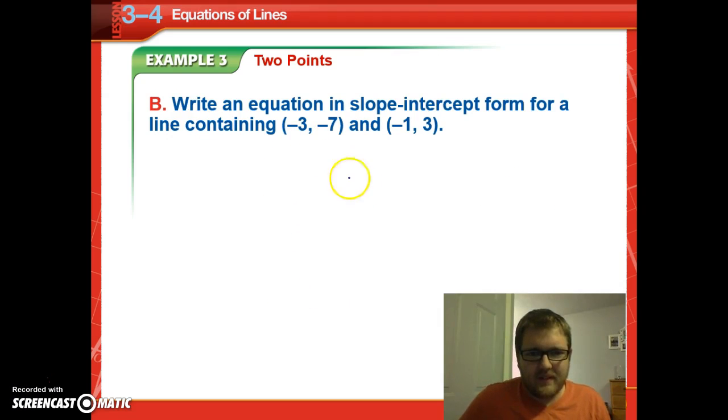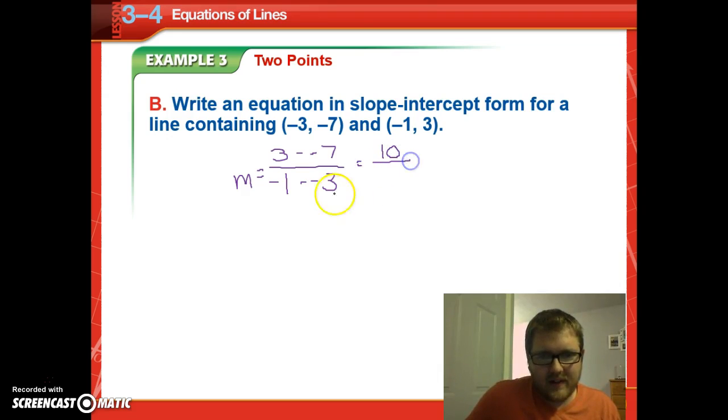All right, now let's do the same thing for the lines negative 3, negative 7, and negative 1, 3. So we have 3 minus negative 7 for the change in y, because we're trying to find our slope, over negative 1 minus negative 3, so 3 minus negative 7 is going to give us 3 plus 7, or 10, over negative 1 plus 3, which is 2. And that's going to equal 5, which is 10 divided by 2.